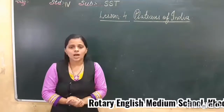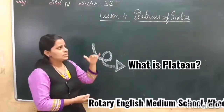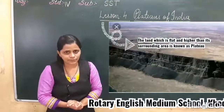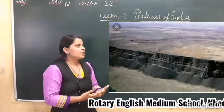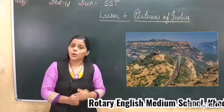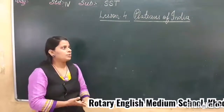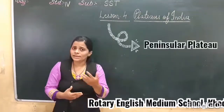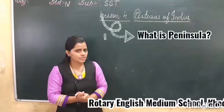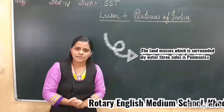We discussed about plateaus. What is plateau? The land which is flat and higher than its surrounding area is known as plateau. And then we discussed that the plateau, it is a rocky area and also called table land. Let us discuss about the peninsular plateau. What is peninsular?